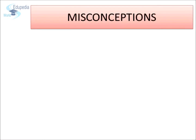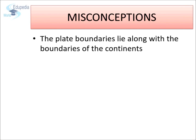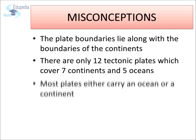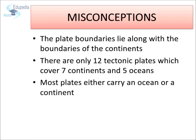Before we begin our exploration about the theory of plate tectonics, let us look at some common misconceptions. First, that plate boundaries lie along the boundaries of the continents. Second, that there are only twelve tectonic plates covering seven continents and five oceans. Third, that most plates either carry an ocean or a continent. And fourth, that Earth's crust lies on the mantle. Well, all these are myths. Let us explore the facts.